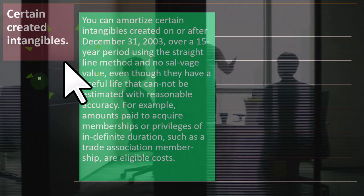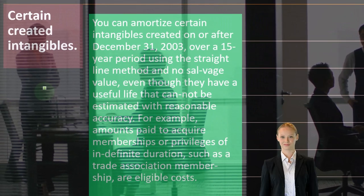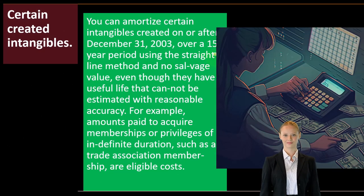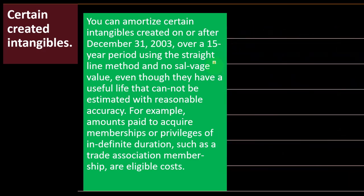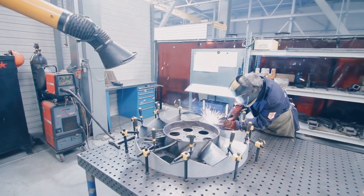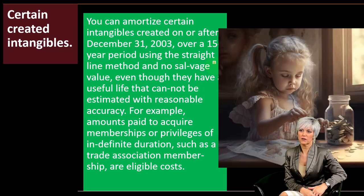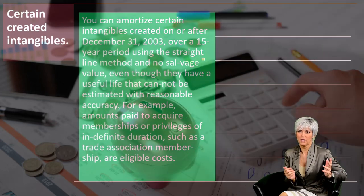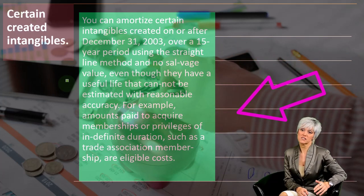Certain created intangibles can be amortized over a 15-year period using the straight-line method with no salvage value, for intangibles created on or before December 31, 2003, even though they have a useful life that cannot be estimated with reasonable accuracy. For example, amounts paid to acquire membership or privileges of indefinite duration, such as trade association membership, are eligible costs. Salvage value is the value at the end of the depreciation period — for example, a forklift at end of life might still have scrap value — but in this case, no salvage value is assumed.